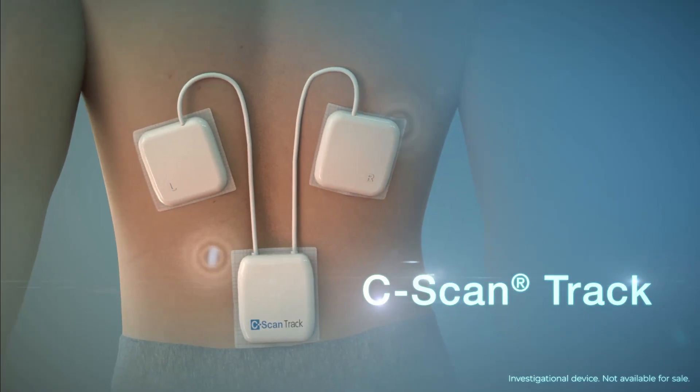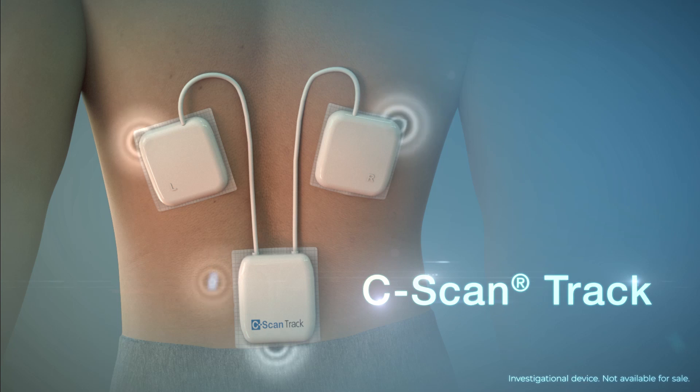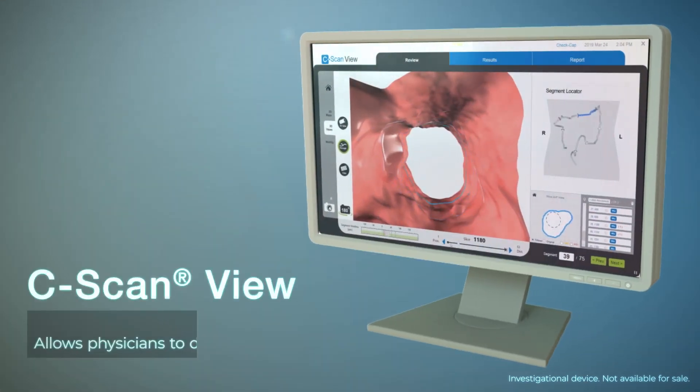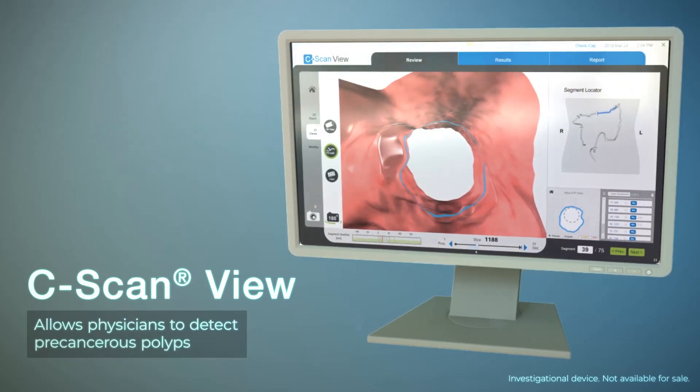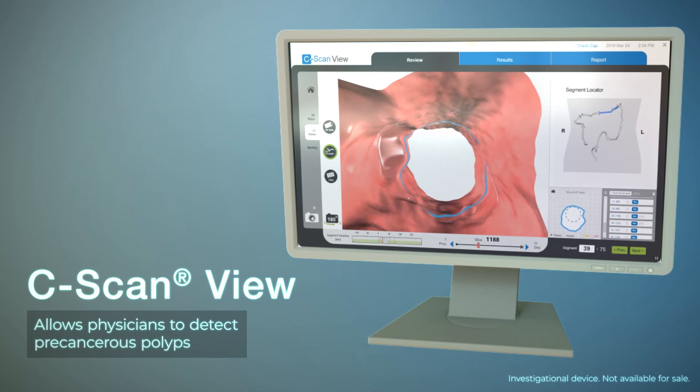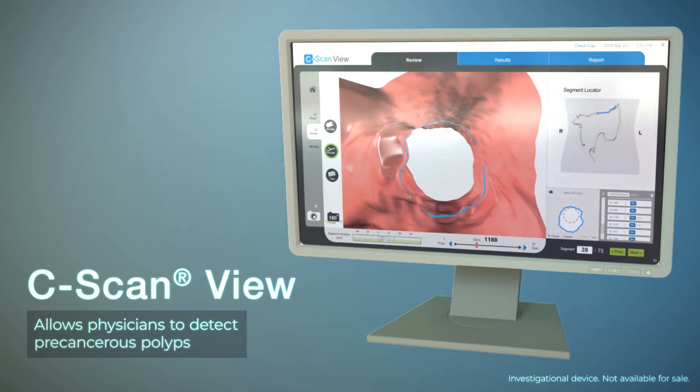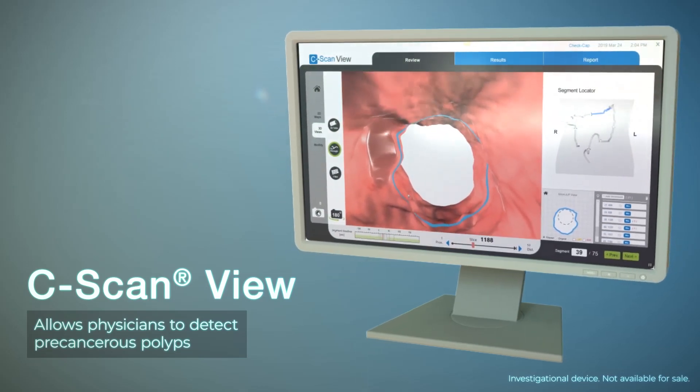The C-Scan TRAC is comprised of three miniaturized patches, continuously tracking and recording capsule data. C-ScanView is a PC-based workstation. The proprietary software processes data received from the C-Scan TRAC and constructs 2D and 3D maps of the inner surface of the colon.